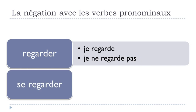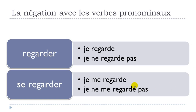With the pronominal verb SE REGARDER, when conjugated you get JE ME REGARDE. For the negative form: JE NE — the first part of the negation comes first — then ME, then REGARDE, and finally PAS. So: JE NE ME REGARDE PAS.